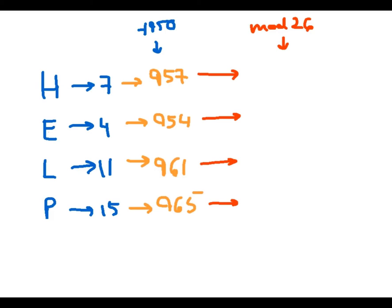957, for example, divided by 26 goes in 36 times with a remainder of 21. And so the least non-negative residue of 957 mod 26 is 21. Likewise, if you take 954 and divide it by 26, it goes in 36 times with a remainder of 18. Likewise, 961 leaves a remainder of 25 and 965 leaves a remainder of 3. So now my message has gone from the letters H-E-L-P to the number string 7-4-11-15 to the number string 957, 954, 961, 965, and now through least non-negative residues to the number string 21, 18, 25, 3.